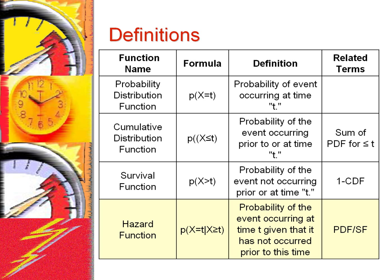Now we are ready to calculate the hazard function. It is defined to be the probability of an event occurring at time period t, given that it has not occurred prior to that time period. The hazard function is calculated as the ratio of the probability distribution function and the survival function.